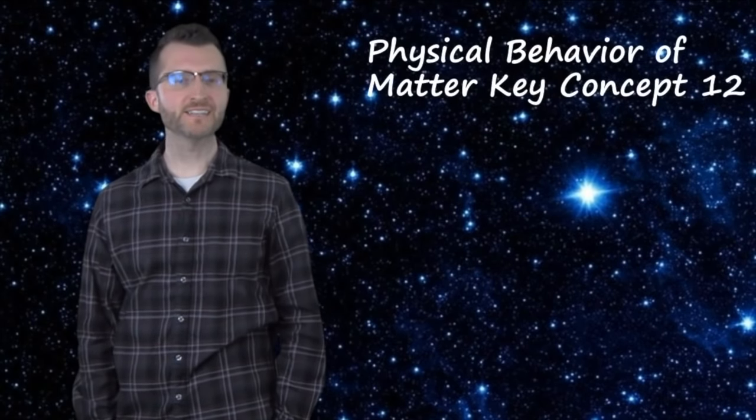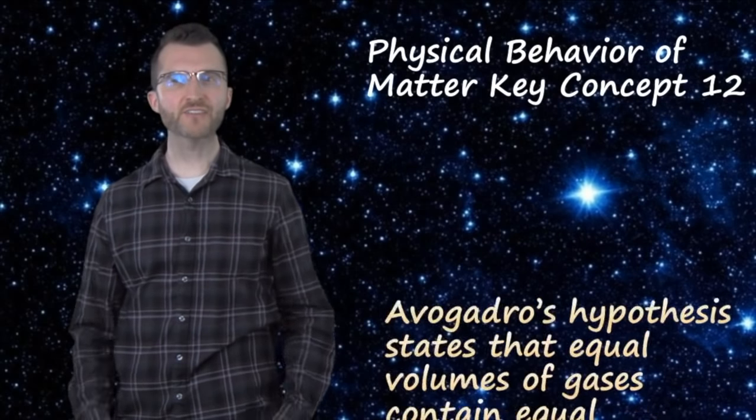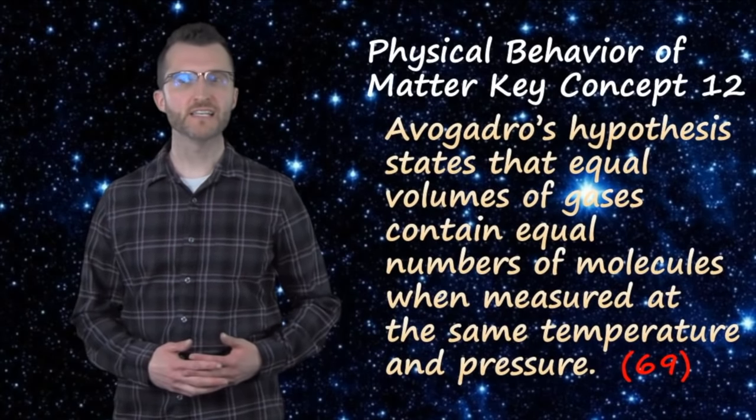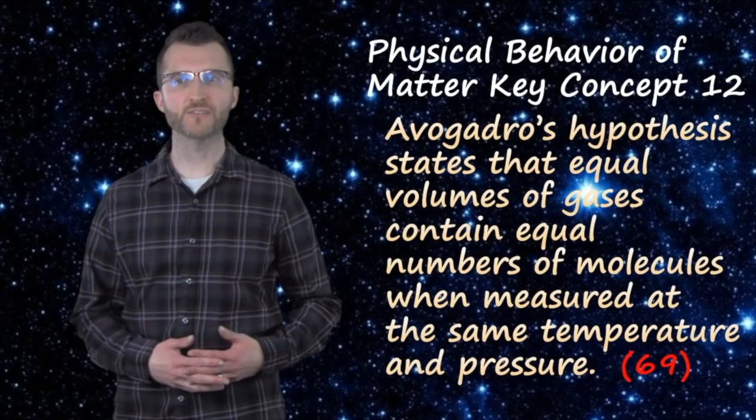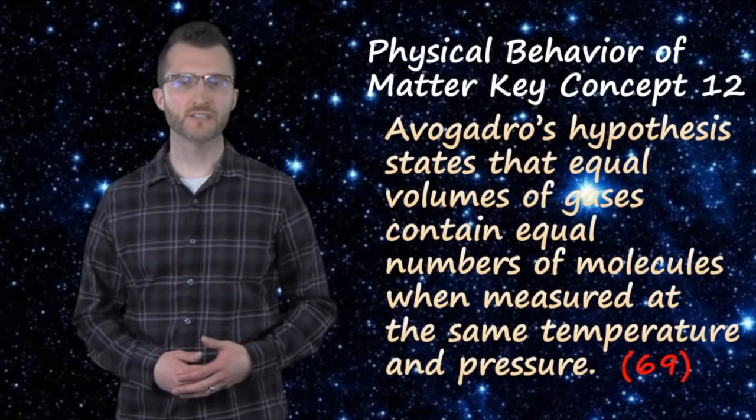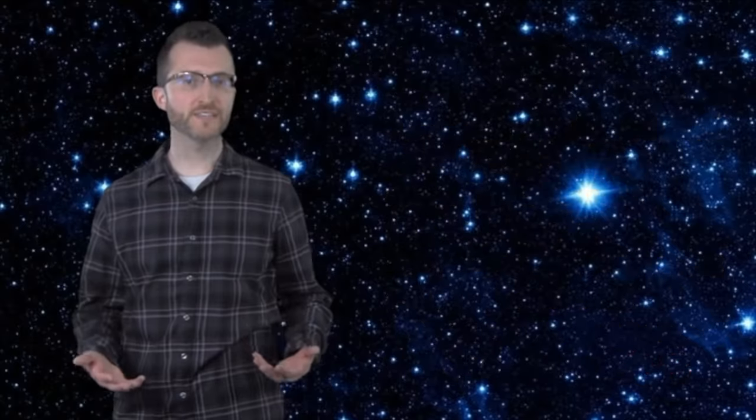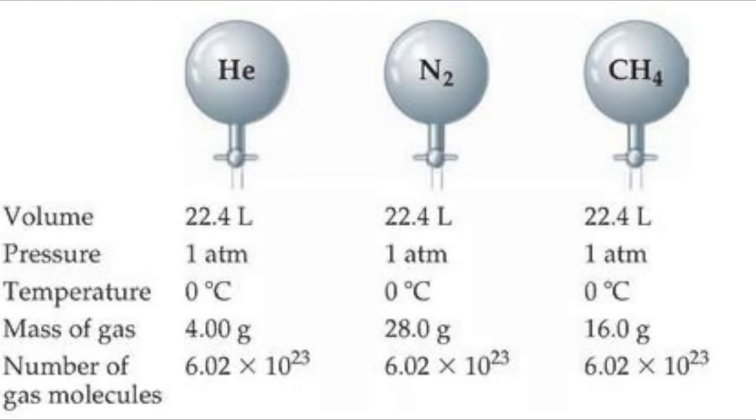Physical behavior of matter, key concept twelve. Avogadro's hypothesis states that equal volumes of gases contain equal numbers of molecules when measured the same temperature and pressure. If we look at our example, we have three different gases. They're all of the same temperature, pressure, and volume. This means that they have to all contain the same number of molecules or moles. They do contain different masses, and that's just because they're different gases with different formula masses. The key point to take away here, though, is that they do have the same number of molecules.